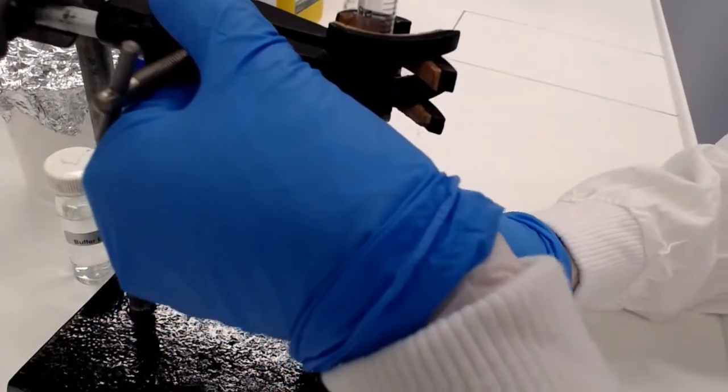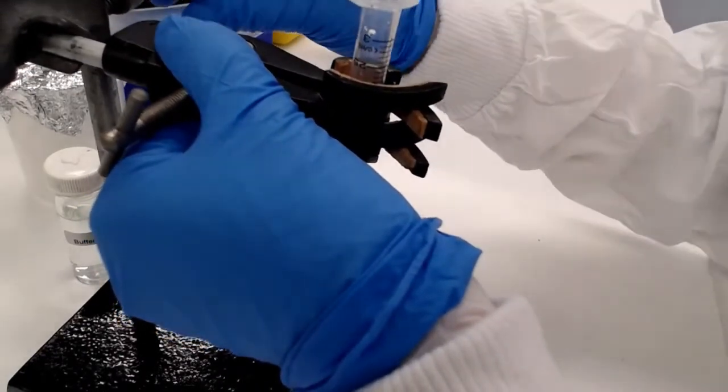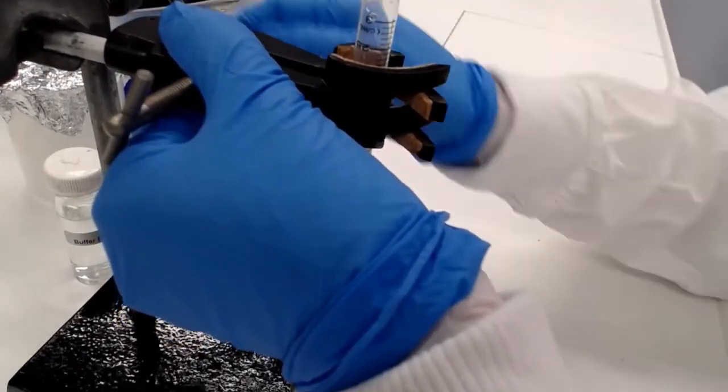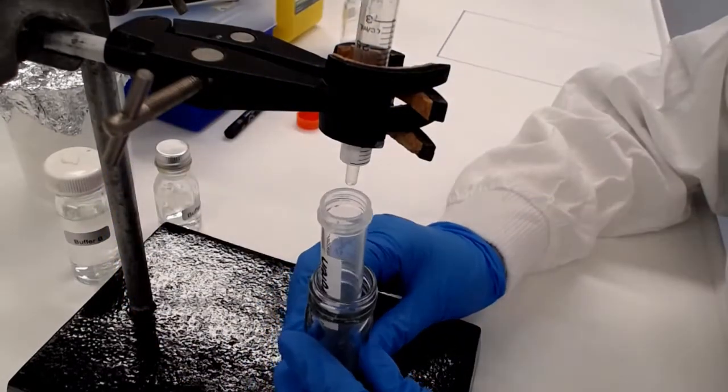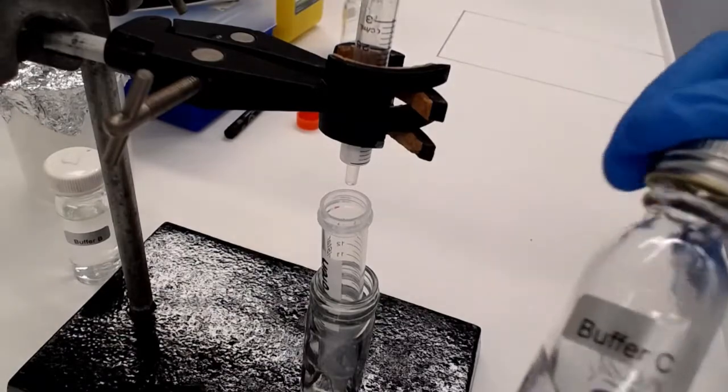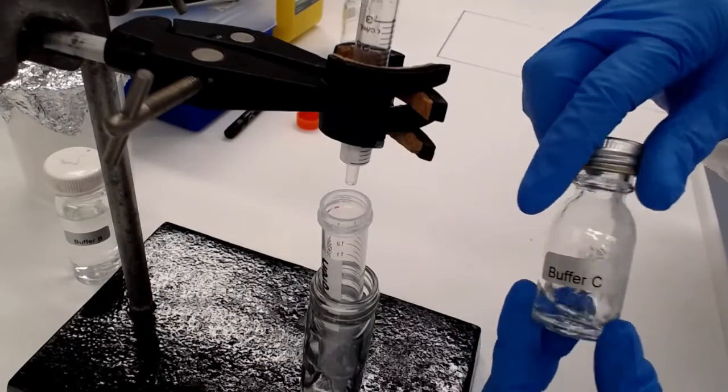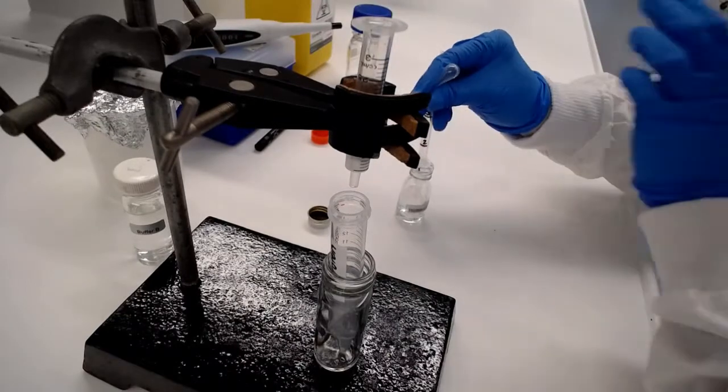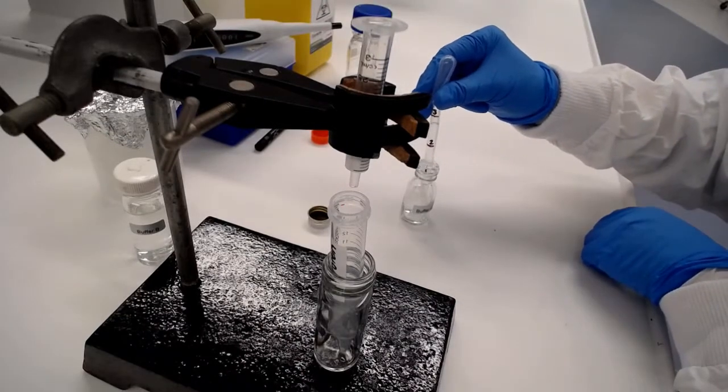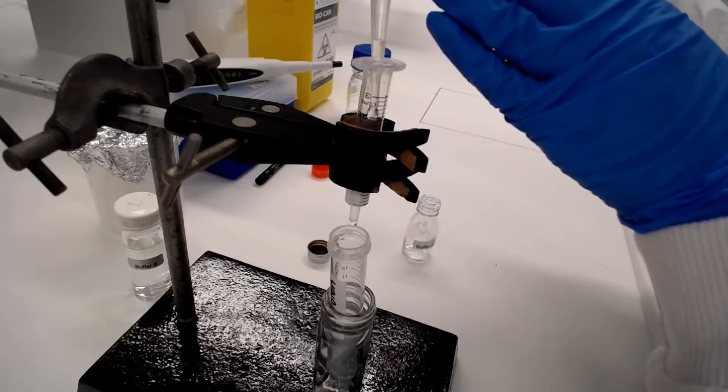Might need to adjust the height of the retort stand clamp here just so that the column sits down neatly inside the top of that falcon tube. Be careful that it's positioned correctly so that our painstakingly prepared PFU protein does not go onto the lab bench. We're using buffer C now. This is the high imidazole buffer and this high concentration of imidazole will now push off the his-tag protein off the column, eluting it into our catch tube.